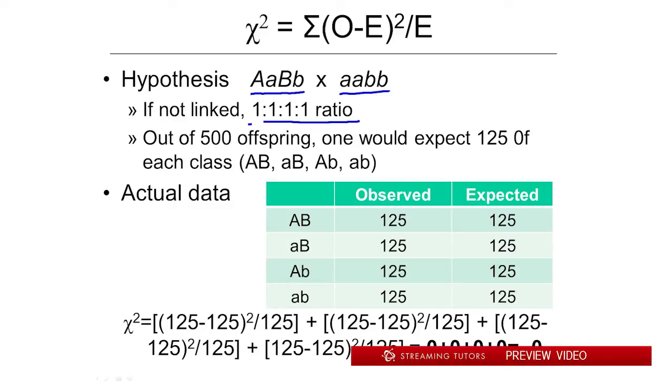So in other words, say we counted 500 offspring, we would expect 125 of each type, because remember if they're unlinked, independent assortment is what's going on, and in theory we should see mixing and matching. We should see all types: AB, aB, Ab, and ab. And that's our shorthand for phenotype.